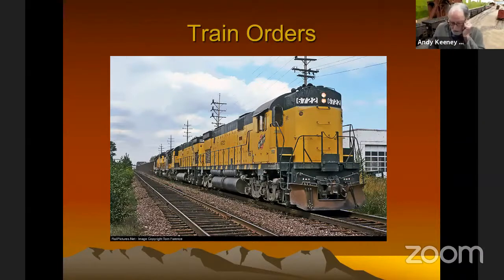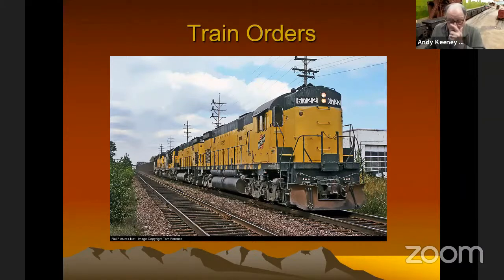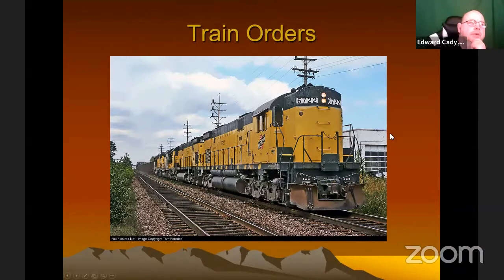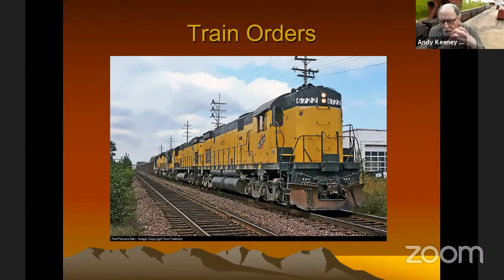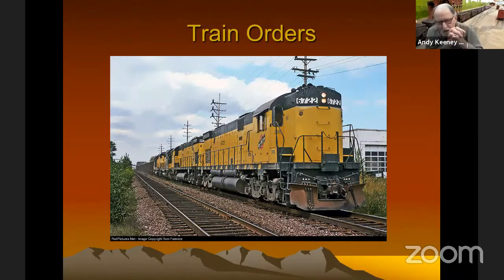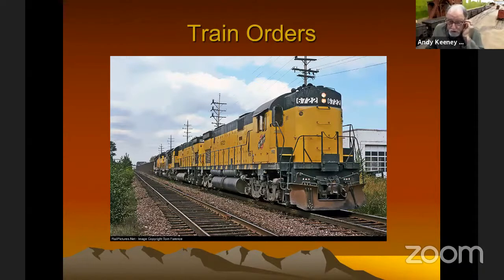I can't give you right off hand exactly when train orders started, but they were very, very early — I would say they preceded the Civil War. What did they use before train orders? I think it would probably be some kind of written orders, but maybe back then you only had one train going in each direction on some of these early railroads — maybe the eastbound train didn't depart until the westbound arrived. They did use telegraph to get orders back and forth between stations — it was way before the telephone.